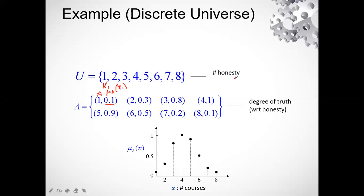Elements 1 through 8 each have a degree of honesty: element 1 has degree 0.1, element 2 has 0.3, element 3 has 0.8, and element 4 has complete honesty at 1. As the membership function value is greater, the degree of truth is higher. On a scale of 0 to 1, element 4 has the highest degree of truth with respect to honesty. Graphically, we plot these values — 0.1 at x1, 0.3 at x2, 0.8 at x3, 1 at x4 — to define the discrete fuzzy set.